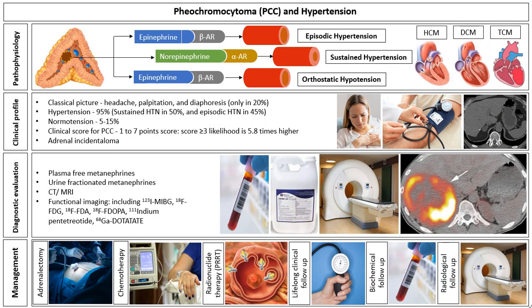Chapter 11, Pheochromocytomas and Hypertension, by Yuri Martin Gurman and Eina Louisa Mayer is a comprehensive review of the genetic, clinical, molecular, diagnostic and therapeutic aspects of this uncommon but unique cause of endocrine hypertension.